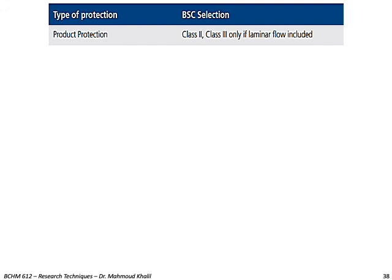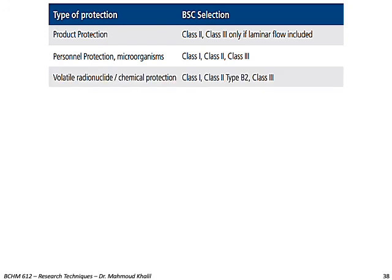For product protection, you need a minimum class 2 or class 3 if laminar flow is included. For personal protection and microorganism protection from contamination, you can use any of the three classes. For volatile radionuclide or chemical protection, you need class 1, class 2 type B2, or class 3.